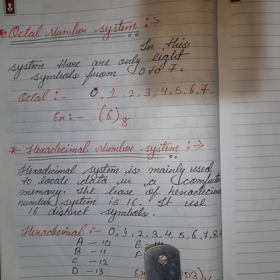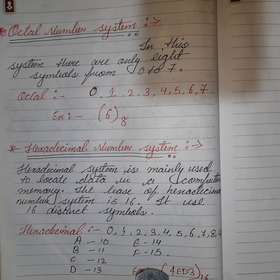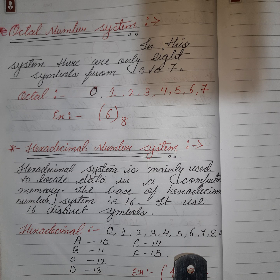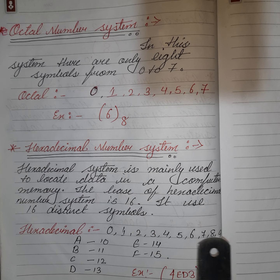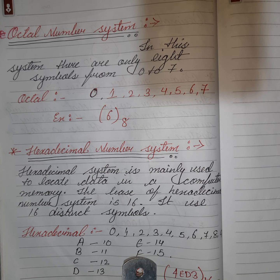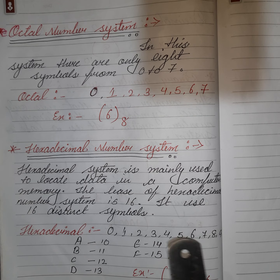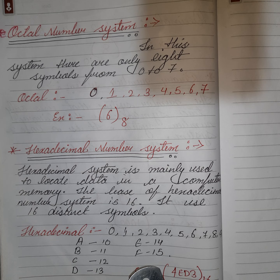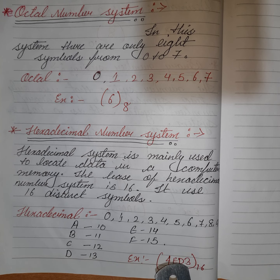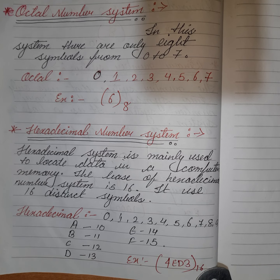The base of the hexadecimal number system is 16. The numbers 0 to 9 are used in the original decimal to represent the values 0 to 9, and the alphabets A to F represent the values from 10 to 15 — making the total 16 distinct symbols. That's why we write a hexadecimal number as (4ED3)₁₆, because 16 is the base.